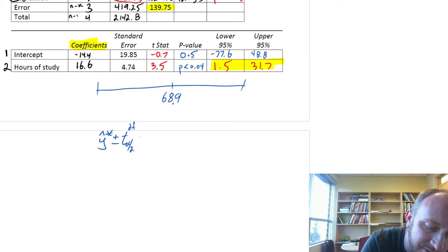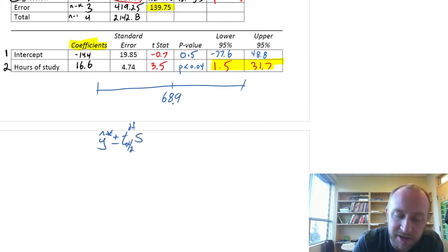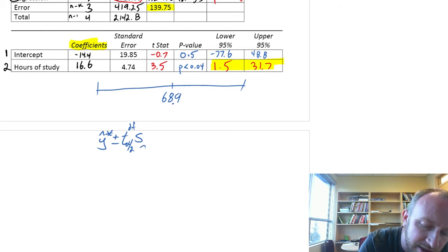our standard error will be a little bit different. It's the standard error of the estimate, of the regression, times the square root of 1 over n, plus x star